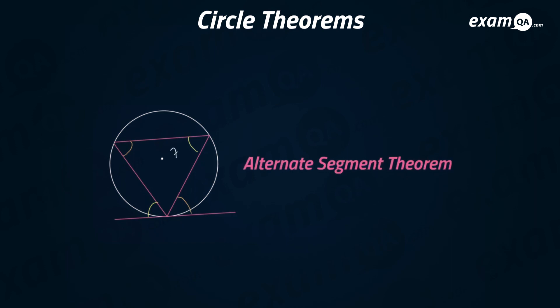The alternate segment theorem says that the top right angle is going to be equal to the bottom left angle, and the bottom right angle, if it's 80 degrees, would be equal to the top left angle. That's all what this alternate segment theorem is.